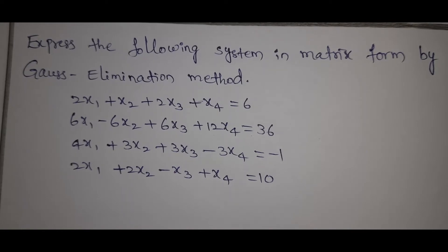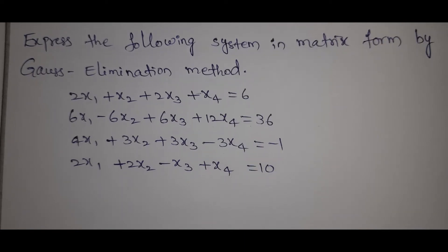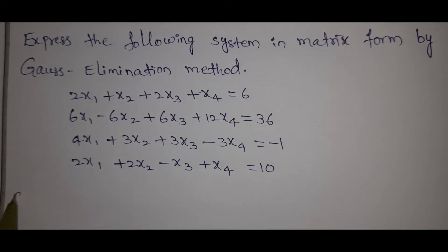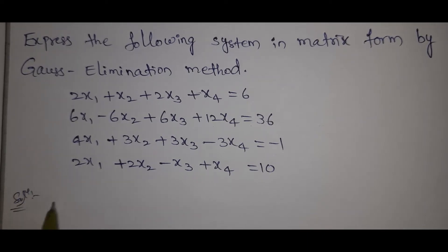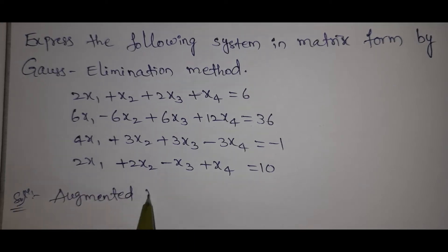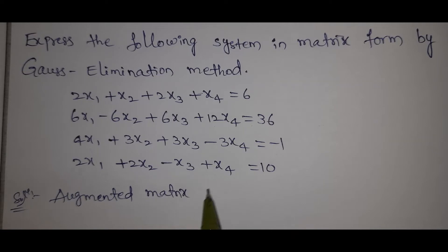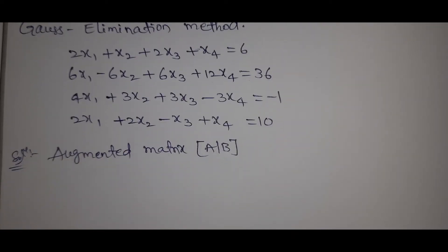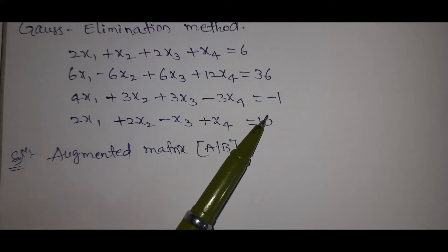This is nothing but echelon form. We will form the augmented matrix. We have 4 variables, so this is a 4x4 matrix.